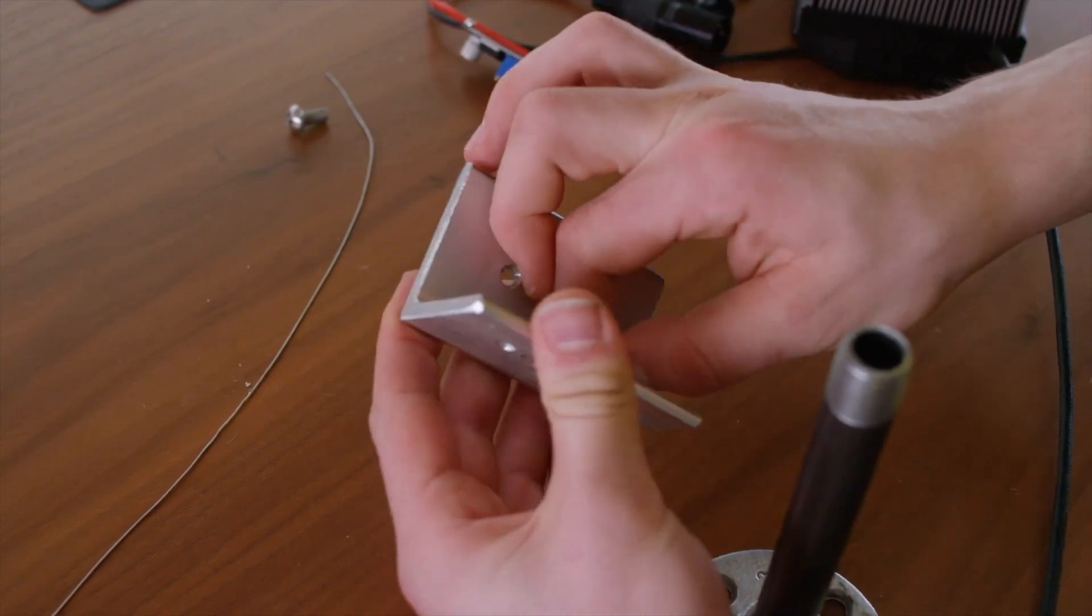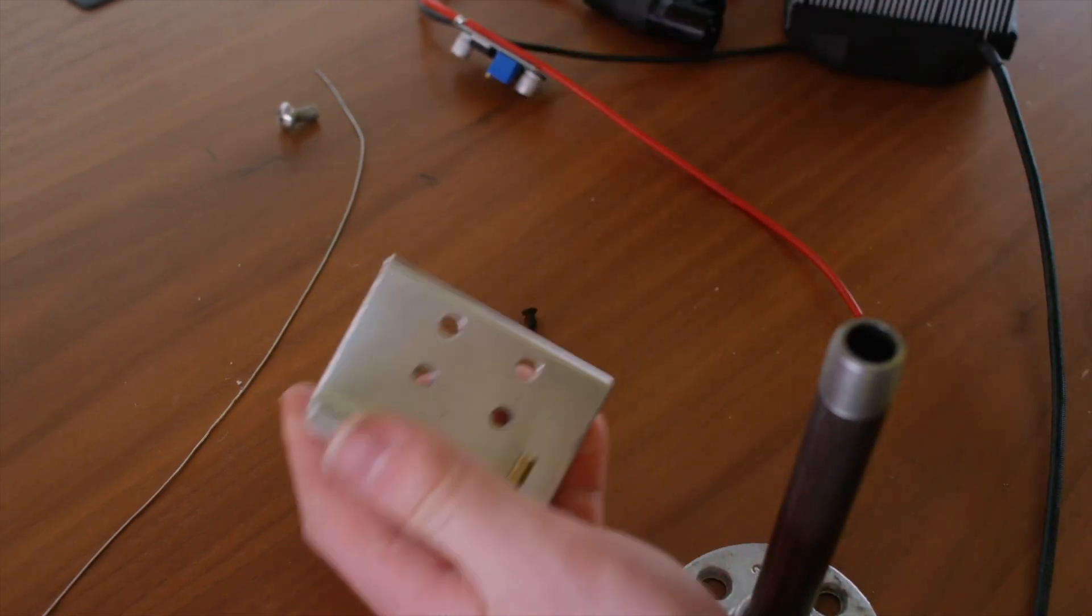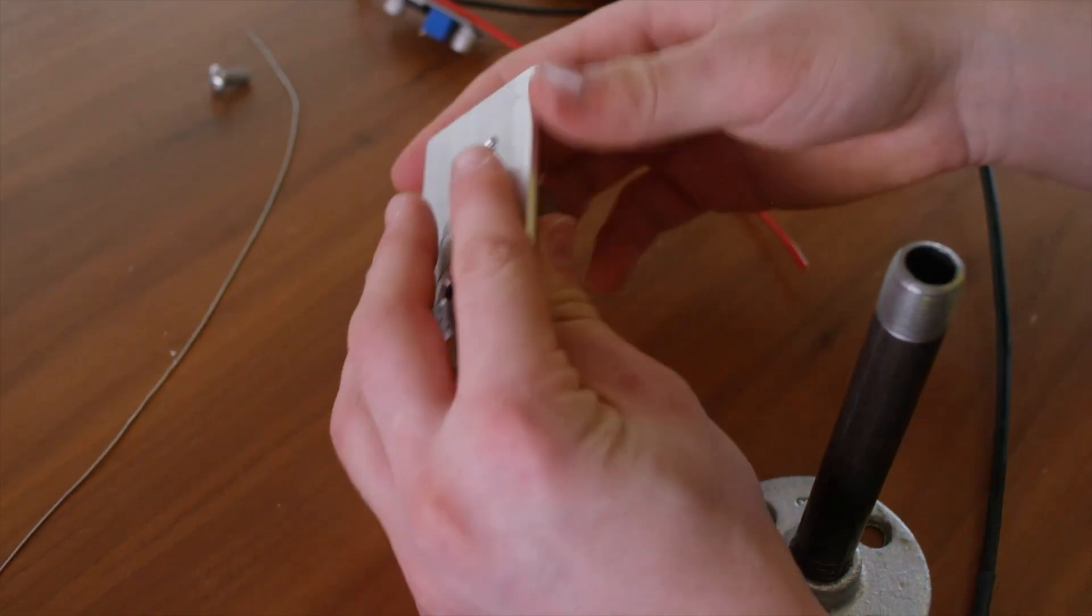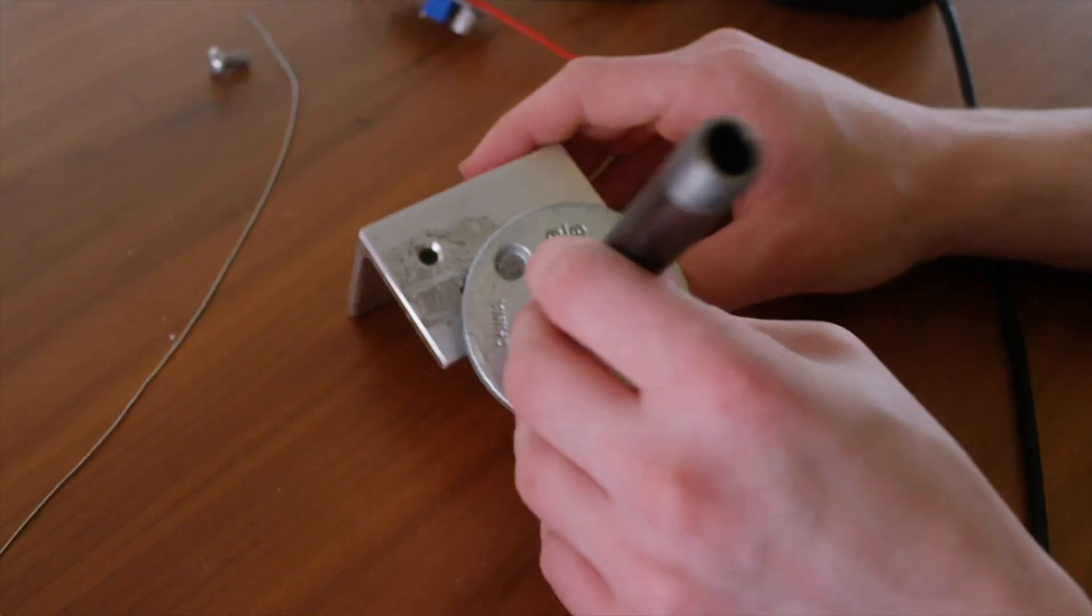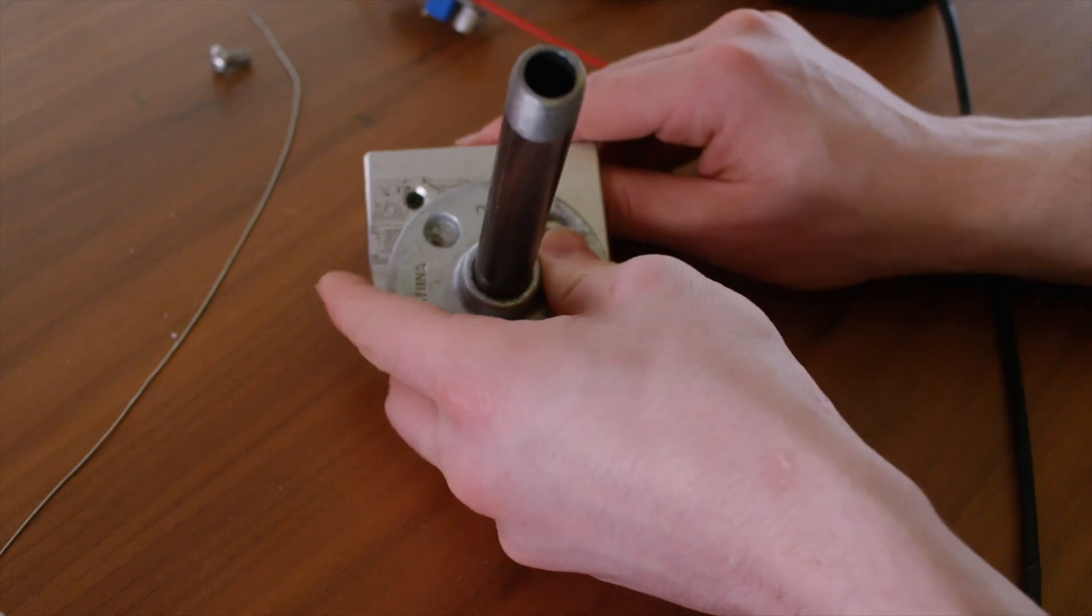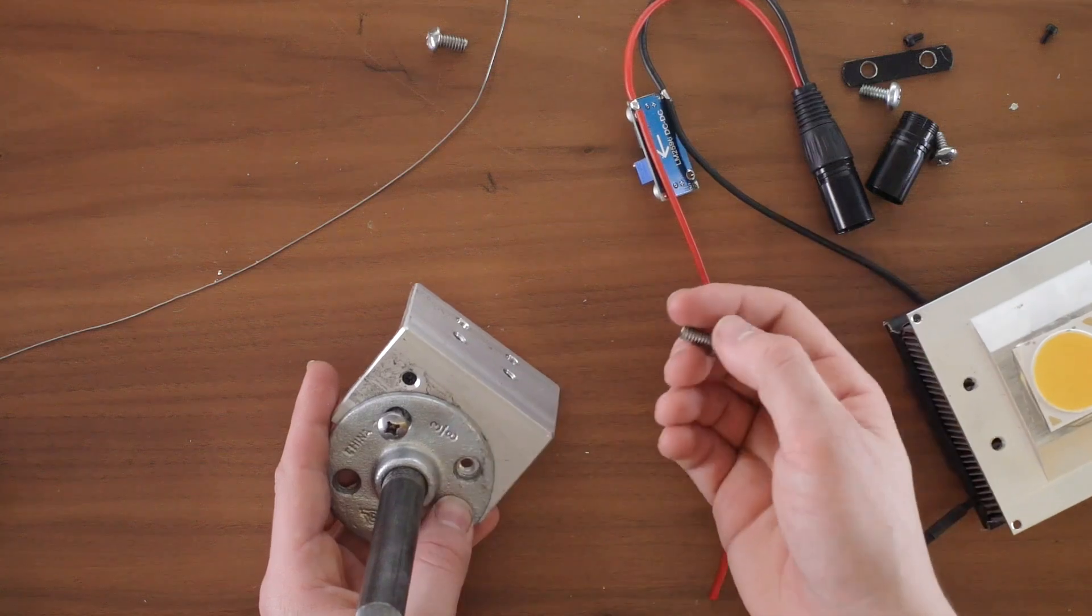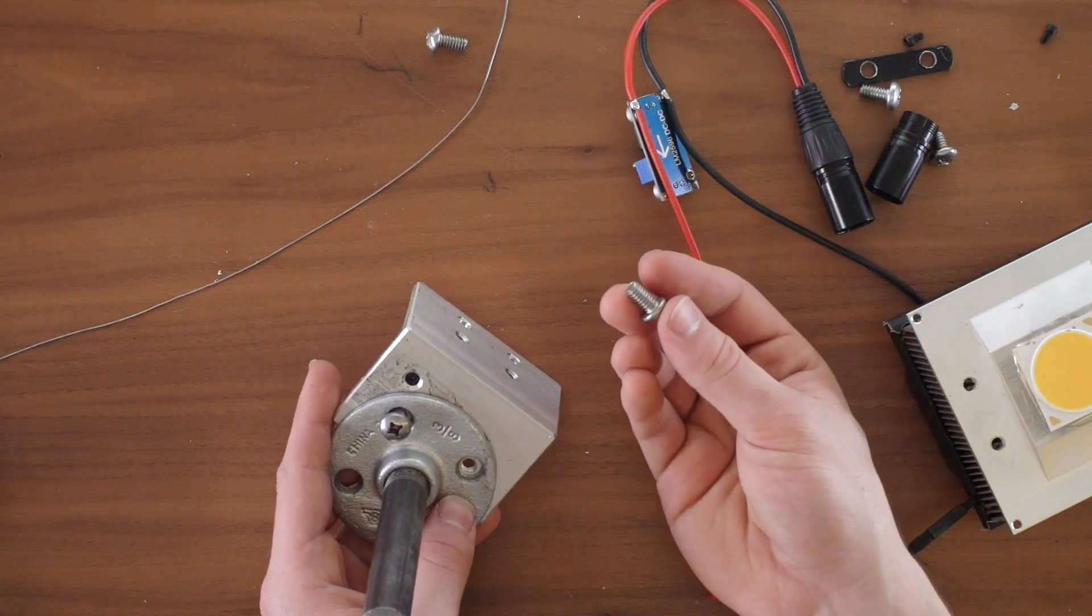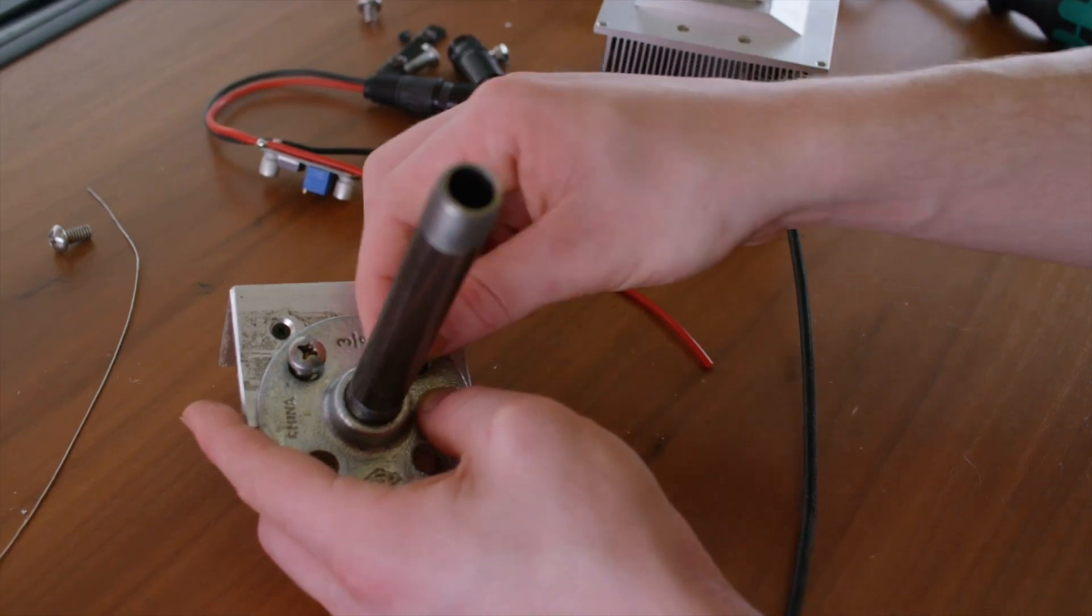And once those are in place you can go ahead and mount your flange to the back using these holes. So grab your other half inch quarter 20 screws and secure the flange into place. Cool.